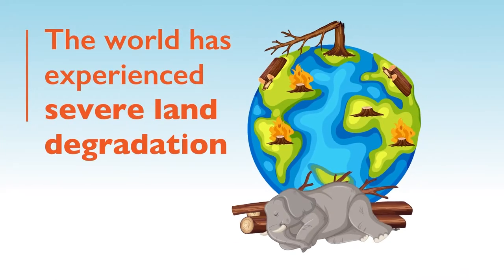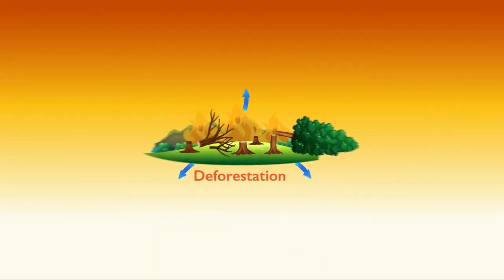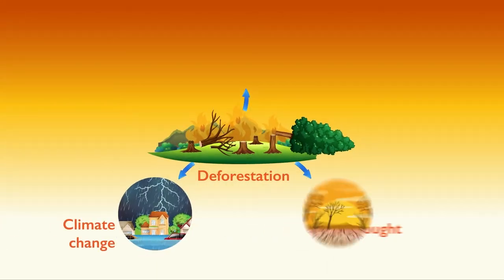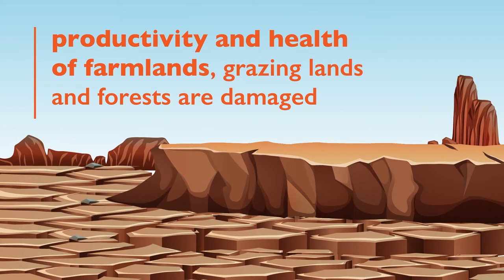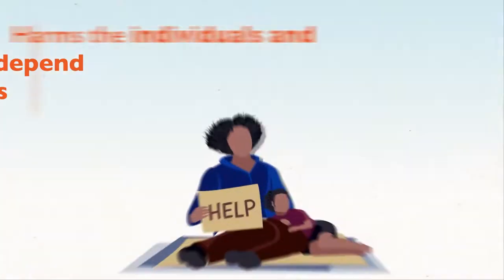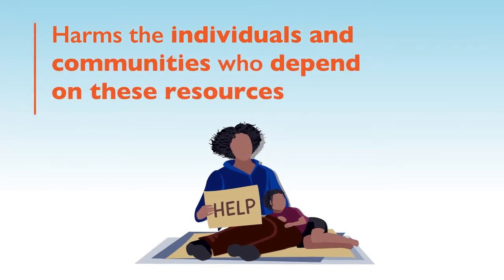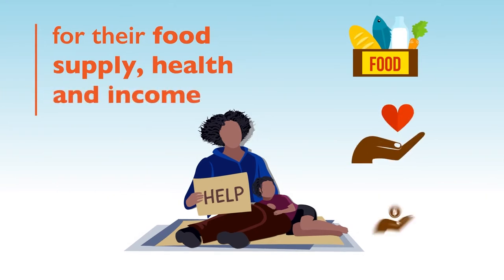The world has experienced severe land degradation due to deforestation, climate change, drought, desertification, and unsustainable land uses. Consequently, the productivity and health of farmlands, grazing lands, and forests are damaged, which in turn harms the individuals and communities who depend on these resources for their food supply, health, and income.